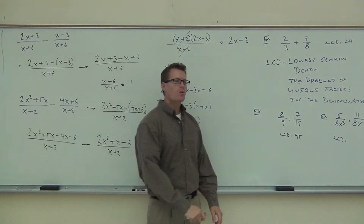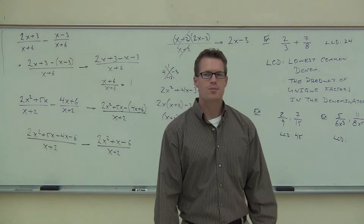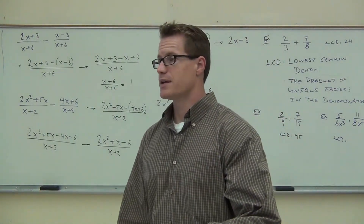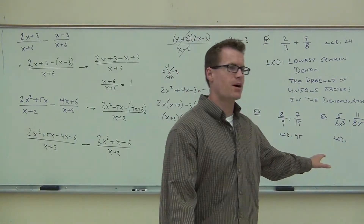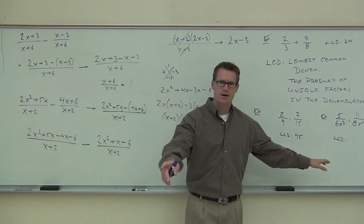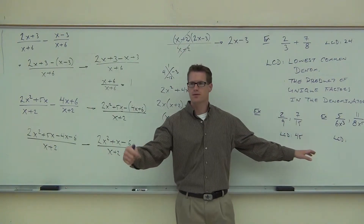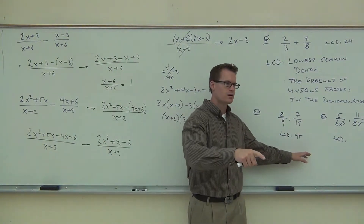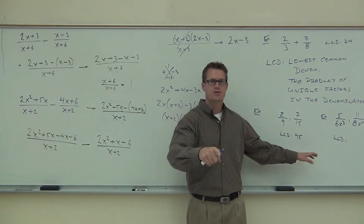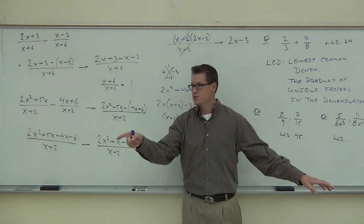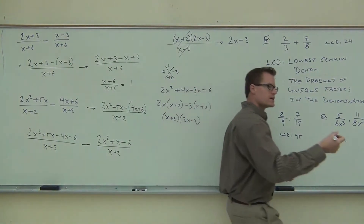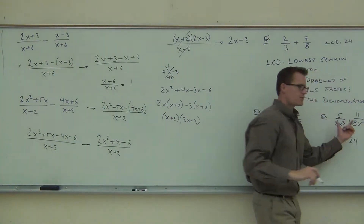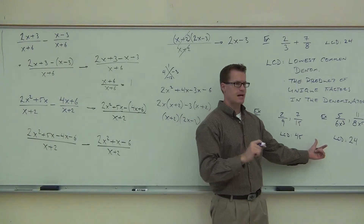In our LCD, we're going to look for the numbers first — we're going to find the LCD of just the numbers and write that down. So let's look at six and eight. Give yourself about ten seconds. Think. Six and eight — LCD is 24. Very good. Finding the LCD of numbers doesn't change; that stays exactly the same.